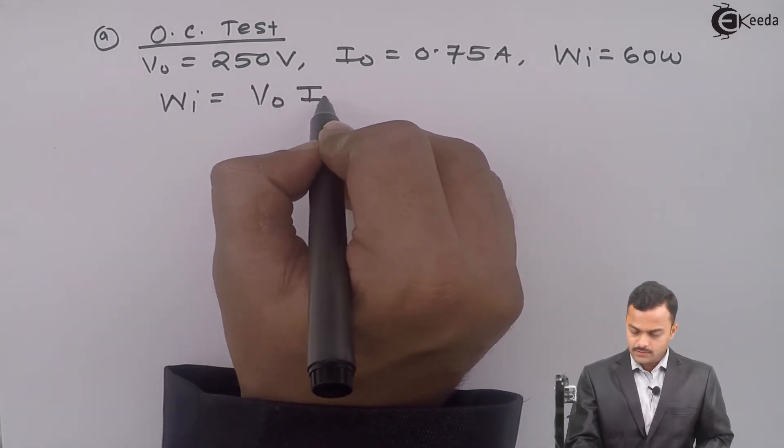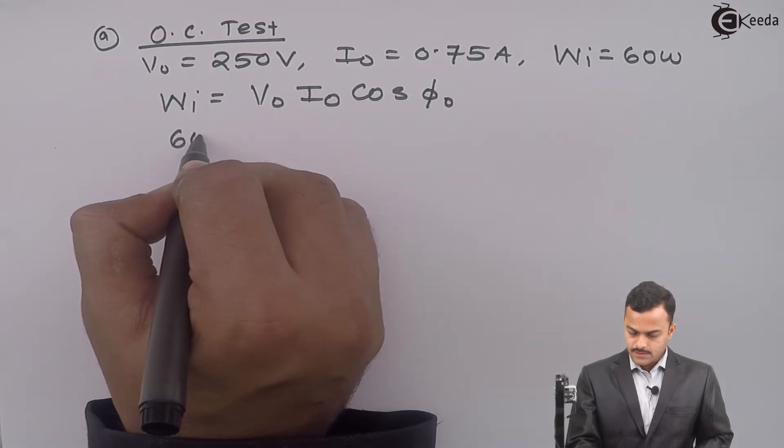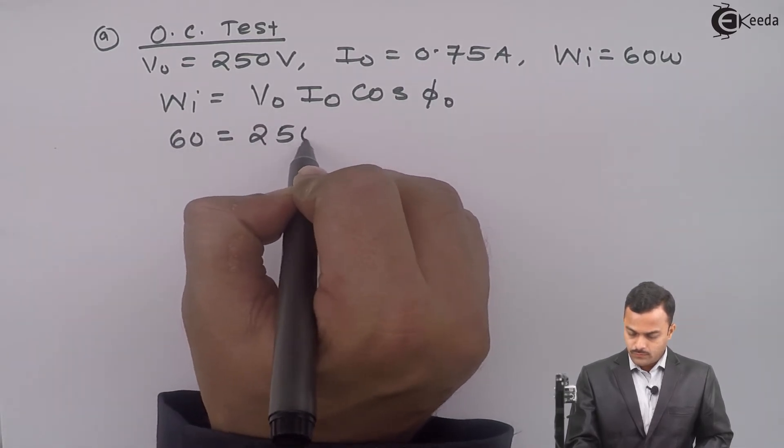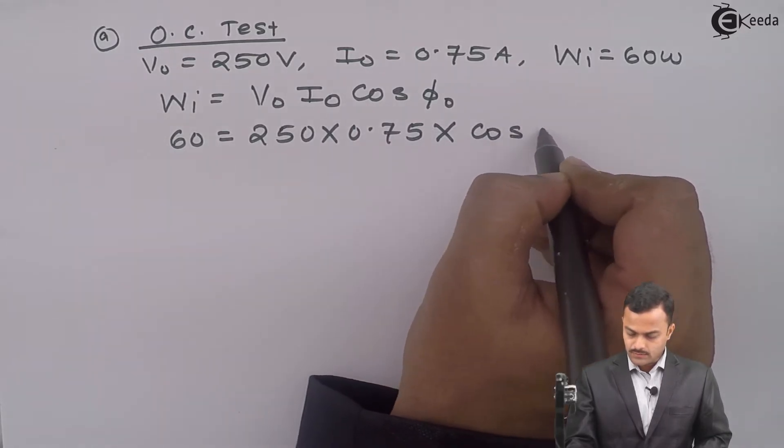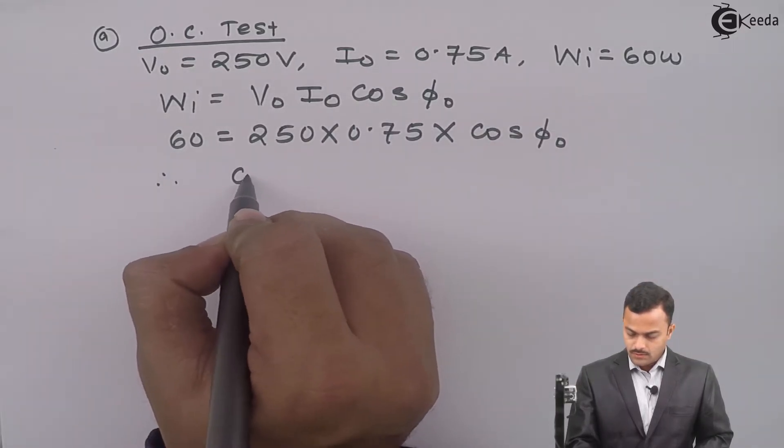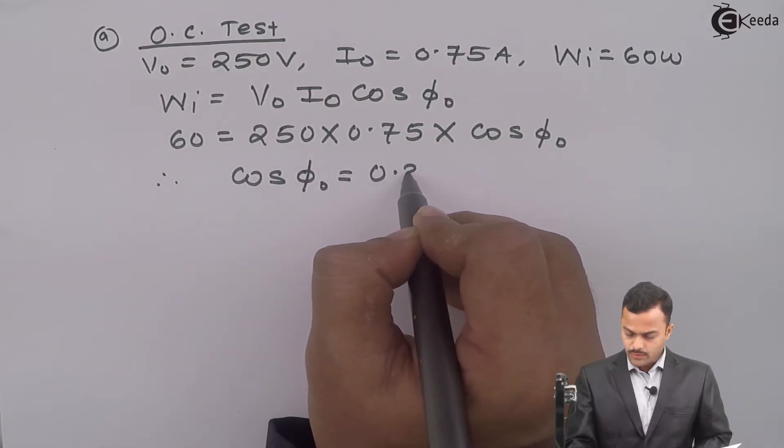W equals V0 I0 cos φ0. 60 equals 250 into 0.75 multiplied by cos φ0. If you solve, you will get cos φ0 equal to 0.32.